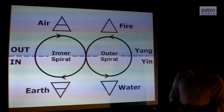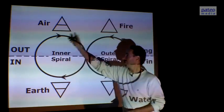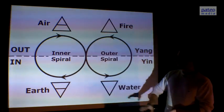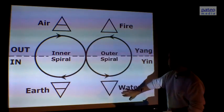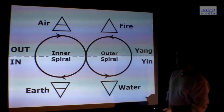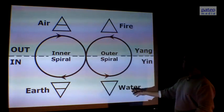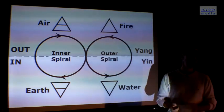We can also make it like a lemniscate, an infinite movement which is spiraling all the way down. This is the inner spiral: earth and air. This is the outer spiral: water and fire. Earth is going in, air is going out. This is going in, that is going out. So we can also depict it in this way.